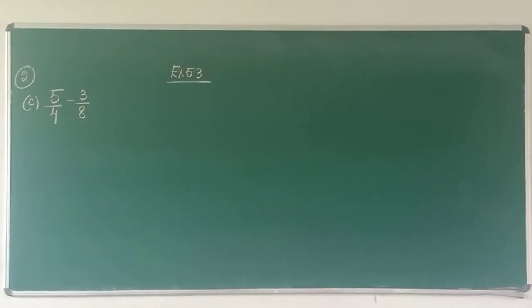We are continuing the exercise and we come to sum number 2 which says simplify. Again here A and B is for homework. The other 6 sums remaining are coming down by C, D, E, F, G and H. So now we are doing subtraction.